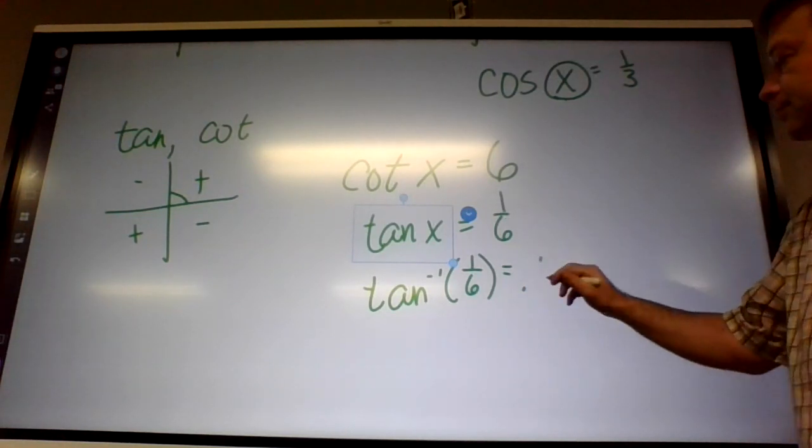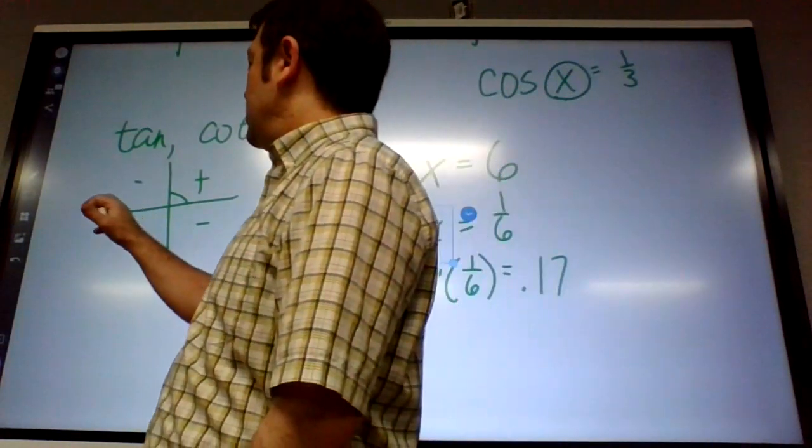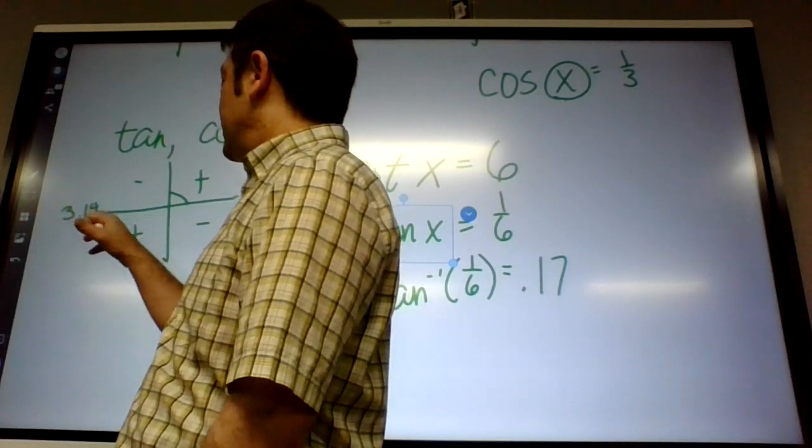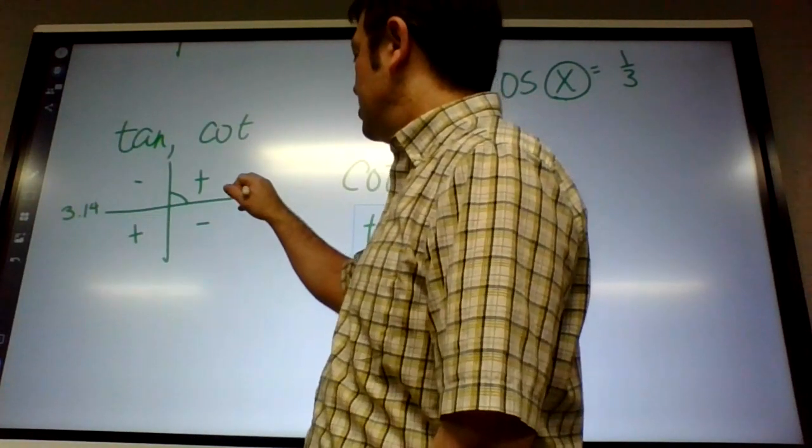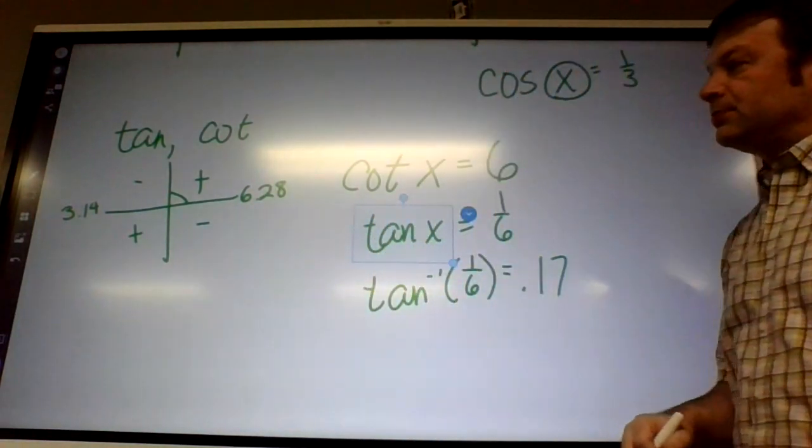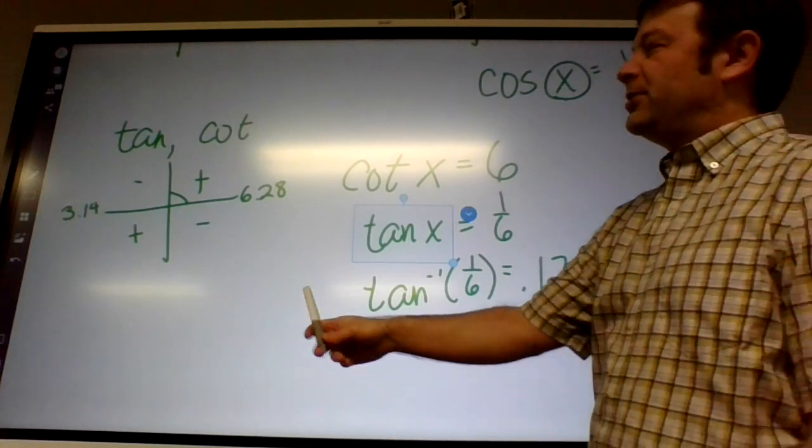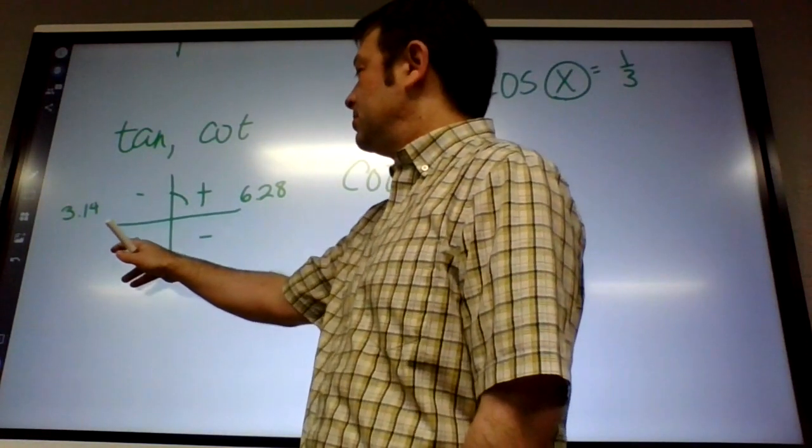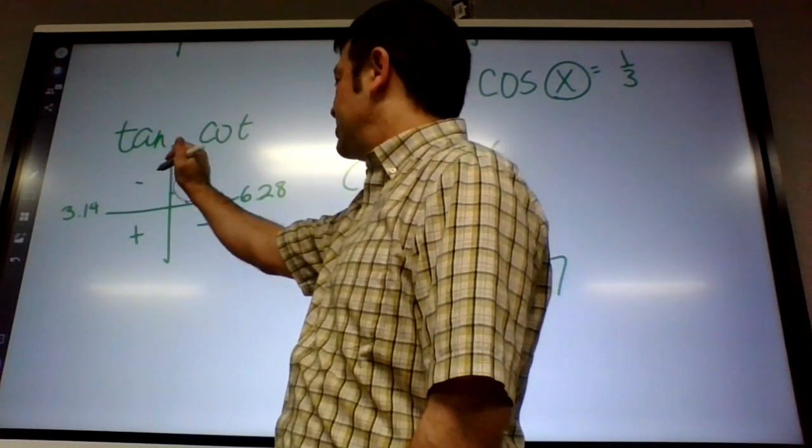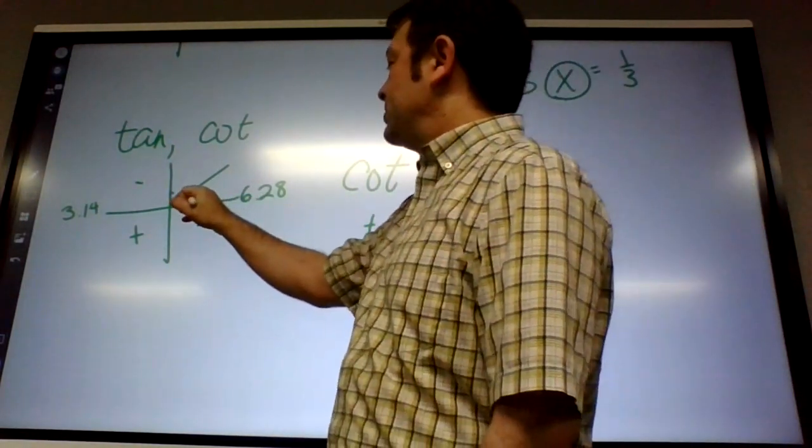So, remember that pi over here is about 3.14, and 2 pi is about twice that, 6.28. So, to find the third quadrant angle, we need to use .17 is somewhere over here.